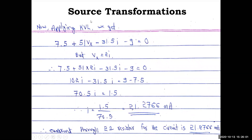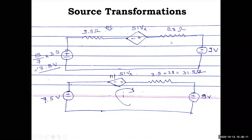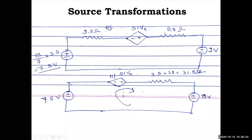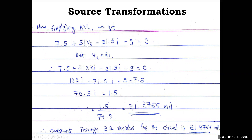Applying KVL to the final single-loop circuit: voltage rises are 7.5V and 51vx; voltage drops are across 31.5 ohm and 9V. The KVL equation is: 7.5 + 51vx − 31.5i − 9 = 0. Now substitute vx = 2i: 7.5 + 51(2i) − 31.5i − 9 = 0.